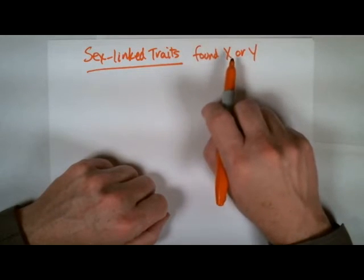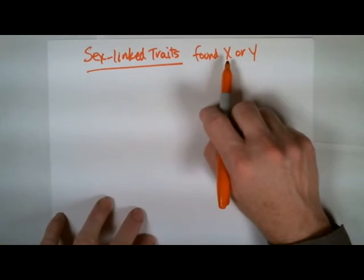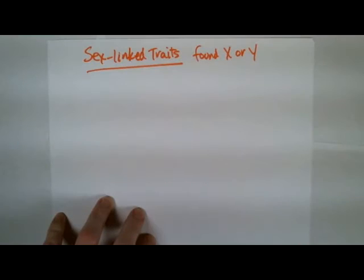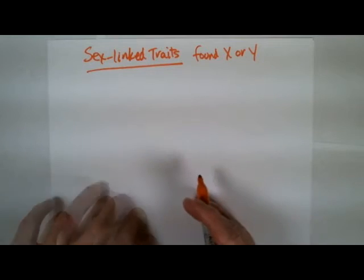Male pattern baldness and hemophilia are two examples that get used a lot and they're found on the X chromosome. These are also sometimes called X linked traits.